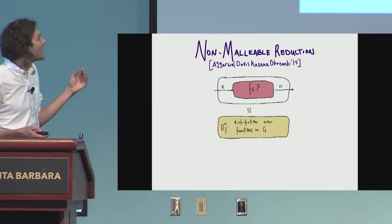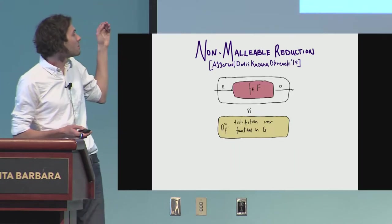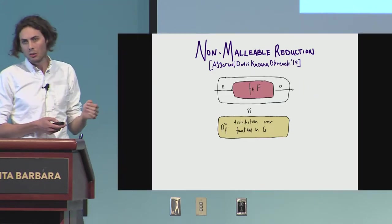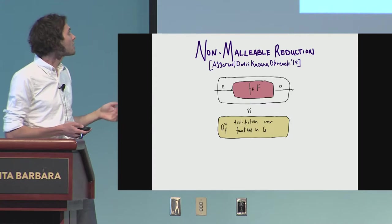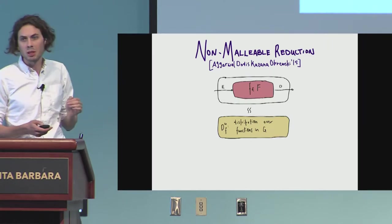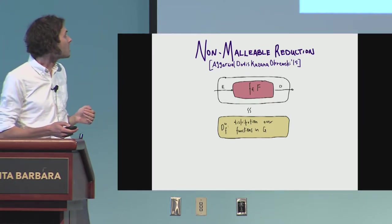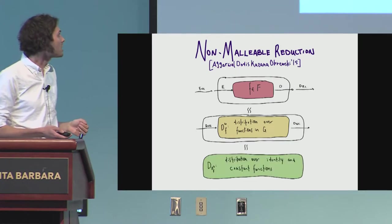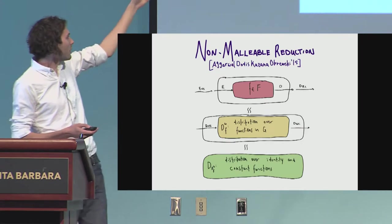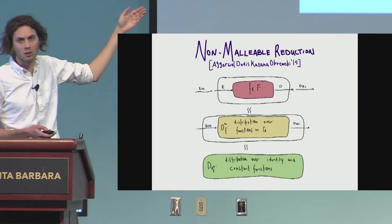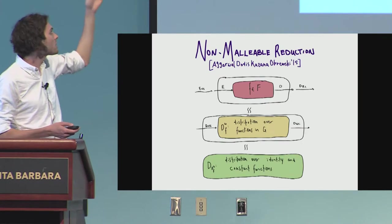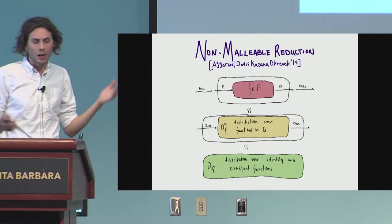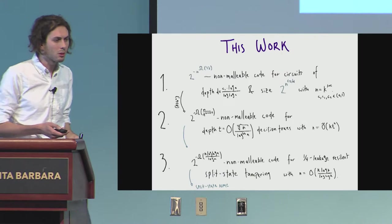So why is this nice? Say we have such reduction from some horrible class F to some nice class G, where we know how to deal with G. If we have such a reduction, and so let's say we have a non-malleable code also for G, we can just compose the two codes. We know that the code applied to functions in G is a non-malleable code. And so the composed code is now a non-malleable code for F. And so it gives us this nice way of constructing codes.